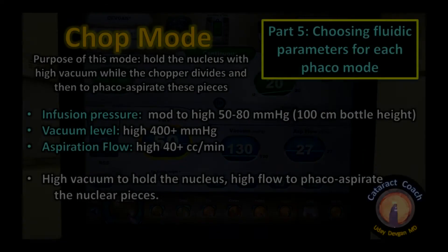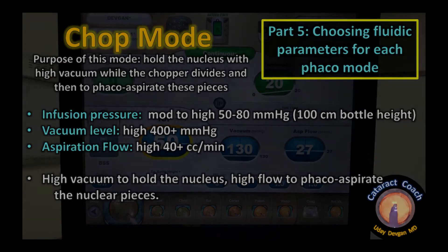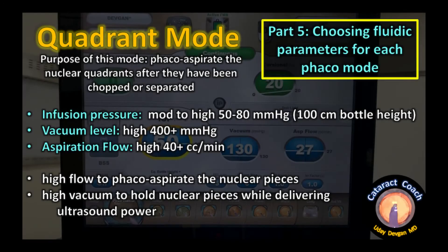Chop mode requires holding the nucleus with high vacuum while the chopper divides, then phacoaspirating the pieces. Infusion pressure must be high to keep up with high aspiration outflow, and vacuum is high to hold the nucleus, with high flow to phacoaspirate the nuclear pieces. Quadrant mode is very similar — phacoaspirating nuclear quadrants after chopping or separation, again requiring high infusion pressure to match high aspiration outflow, high vacuum to hold pieces, and high flow to aspirate them.